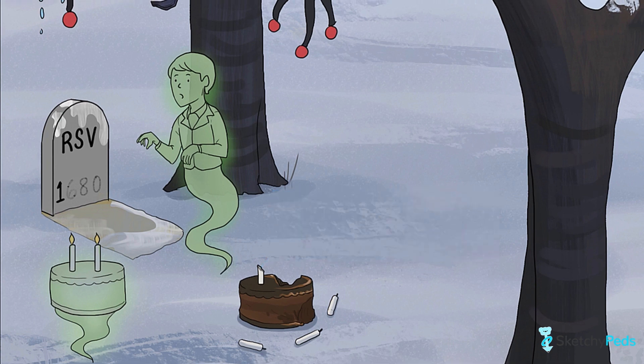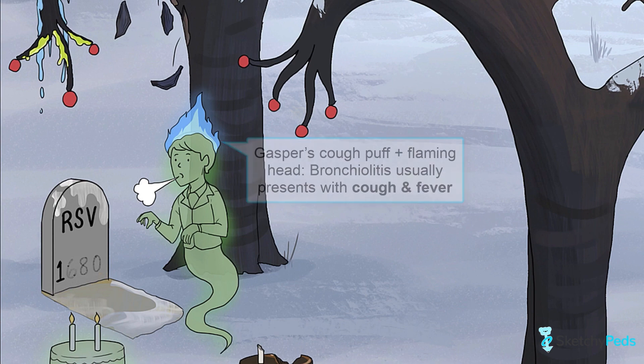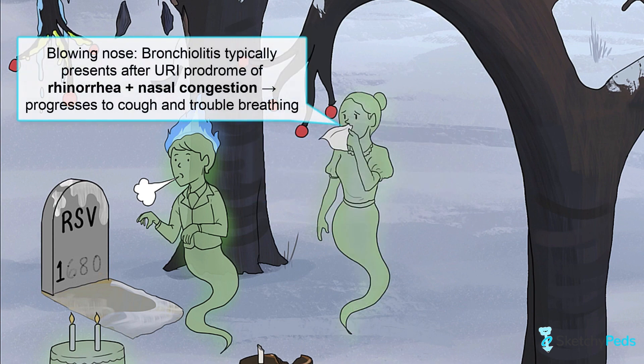How do kids with bronchiolitis typically present? They will come in with a cough, represented by this puff of air coming from Gasper, as well as a fever, which is seen in about 50% of cases and is depicted by Gasper's flaming head. Getting a good history is also important, as patients will often have had an upper respiratory prodrome, usually consisting of a runny or stuffy nose, pictured here by the ghost mom blowing her ghastly nose boogers.